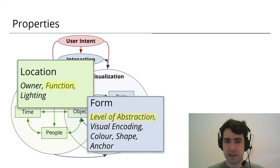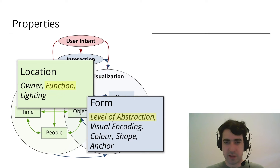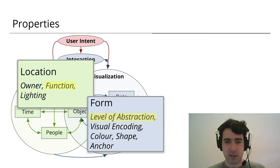Form has properties like level of abstraction, visual encoding, color, shape, and anchor. Level of abstraction represents, for example, whether you're showing a bunch of individual data points, or whether you're showing a single color to represent an average of a whole bunch of data.